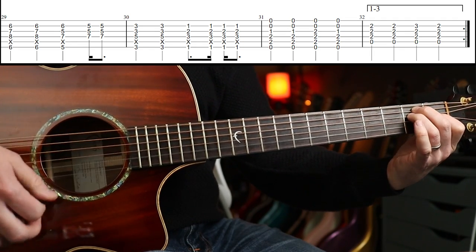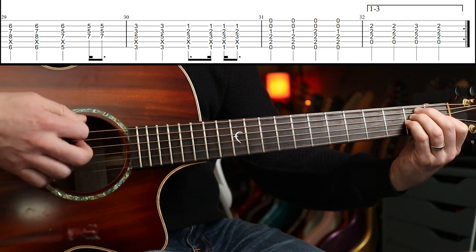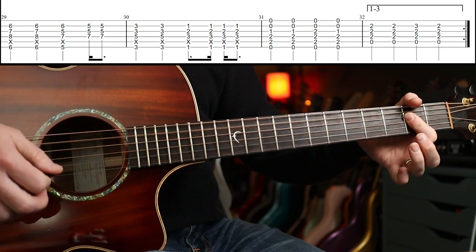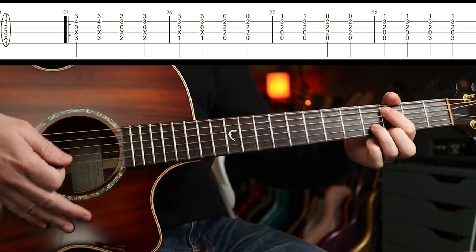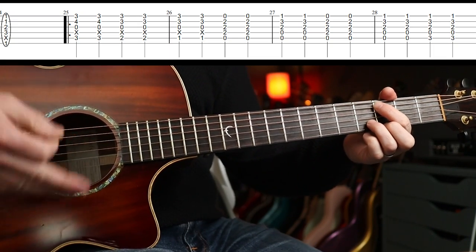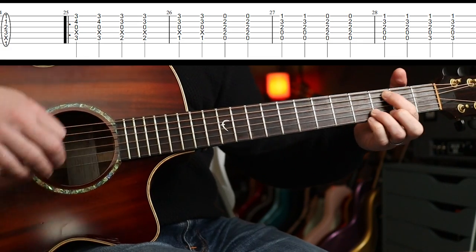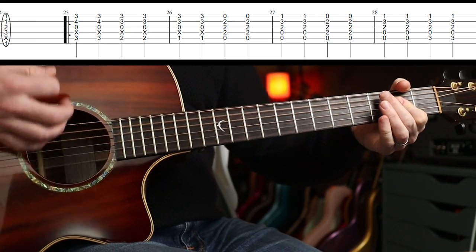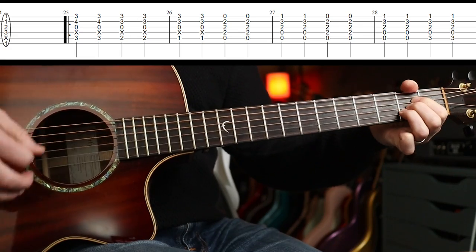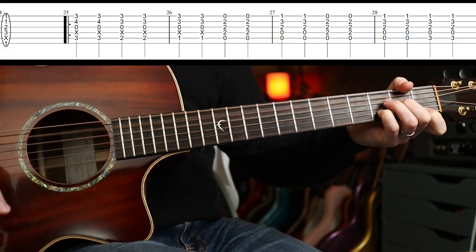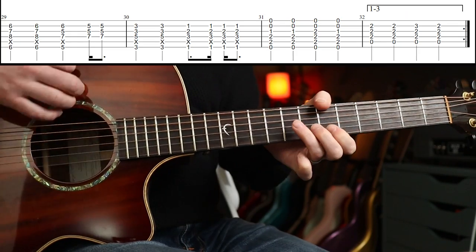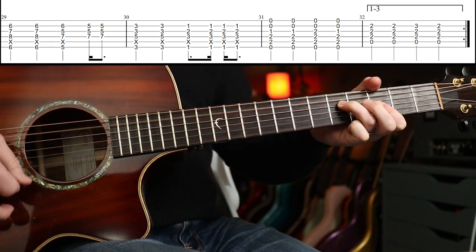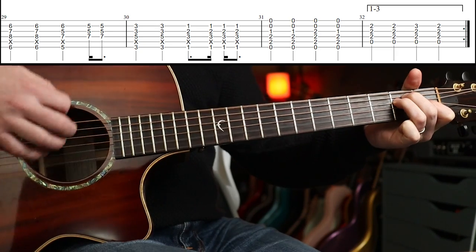There's a little sus4. Third beat. Same with the A. Let's play the whole thing round, shall we? Slowly. Three, four.